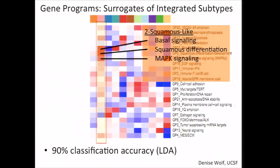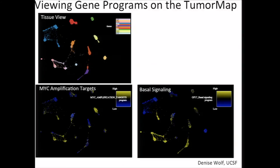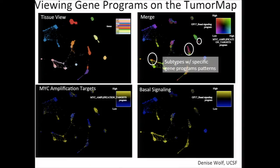The squamous set is defined by squamous differentiation, and then another group by basal signaling and a MAP kinase signaling cascade. You can look at all of these on the tumor map — for example, see MYC amplification targets and their activity, or the basal signaling program — and pull up which tumor types have higher activity in those profiles. You can even do an overlay to find ones that go against the general grain.